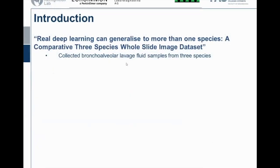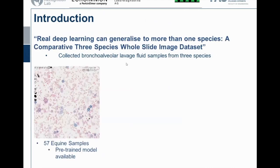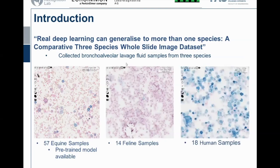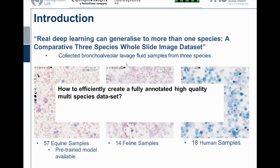Over the course of the last year we collected 57 equine samples — equine meaning horses — and our first contribution for Scientific Reports was that we trained a model on 17 of these 57 slides, so we have a pre-trained model available for this dataset. Additionally, we collected 14 cat samples and 18 human samples, and as you can already see, they look quite different, which raises some questions — first of all, how to efficiently create a fully annotated, high-quality multi-species dataset from these three species.